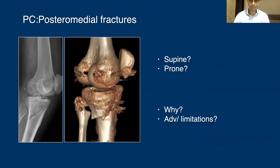Looking at posteromedial fractures, this is a simple posteromedial fracture pattern. If you have such a fracture, how would you treat it surgically? Would you go supine or would you go prone? Most of us would tend to go supine on this one, but why? What are the advantages of going prone or supine and what are the limitations?